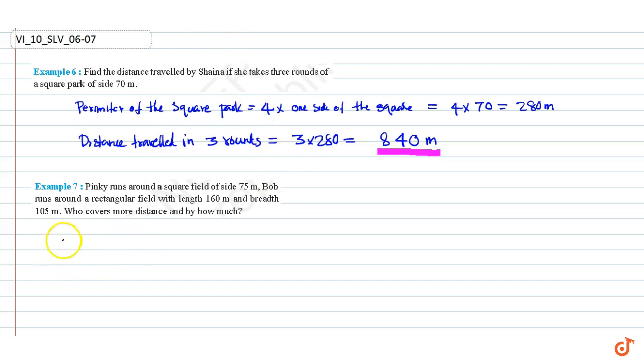We know that the perimeter of the square field equals 4 times the length of one side of the square, which equals 4 × 75, which equals 300 meters.